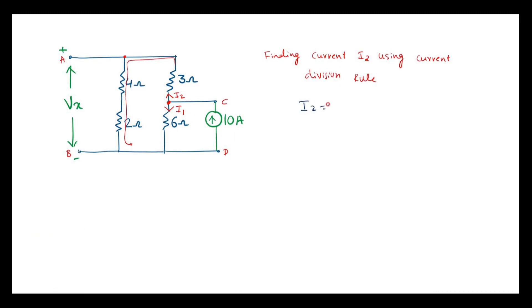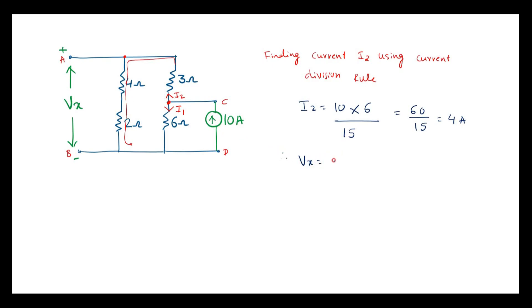Finding I2 again using the current division rule: I2 = 10 × opposite resistor / sum of all resistors. I1 is flowing in the 6 ohm resistor, so 6 ohm is the opposite resistor. So I2 = 10 × 6 / 15 = 60/15 = 4 A. Now Vx is the voltage across 4 ohm and 2 ohm, which are in series with equivalent value 6 ohm. Therefore Vx = 6 × I2 = 6 × 4 = 24 volts.